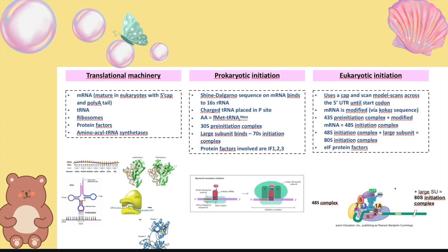In prokaryotic initiation, the Shine-Dalgarno sequence on mRNA binds to the 16S rRNA. Charged tRNA is placed in the P-site, fMet-tRNA forms the 30S pre-initiation complex, and the large subunit binds to form the 70S initiation complex, involving protein factors IF1, IF2, and IF3. Eukaryotic initiation uses a cap-and-scan model, scanning across the 5' UTR until the start codon. The modified mRNA and 43S pre-initiation complex form the 48S initiation complex, then the large subunit joins to form the 80S initiation complex, involving eIF factors.